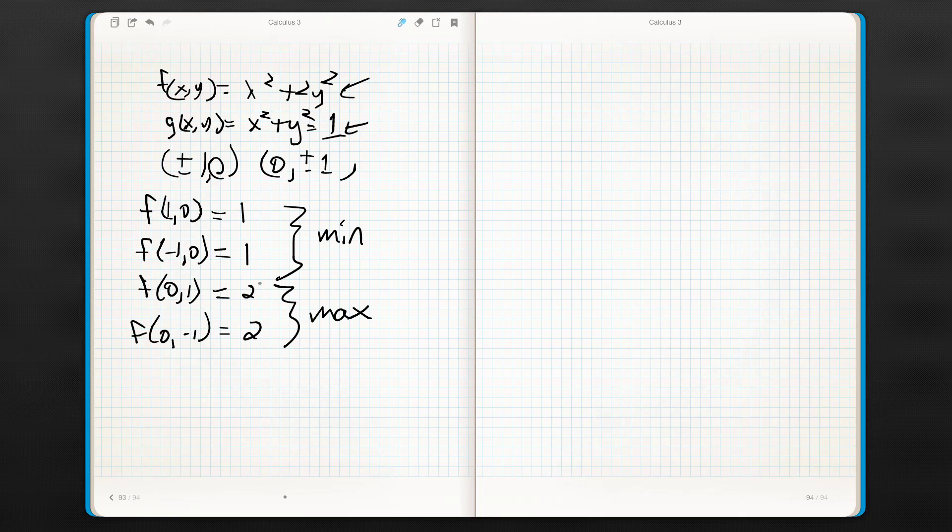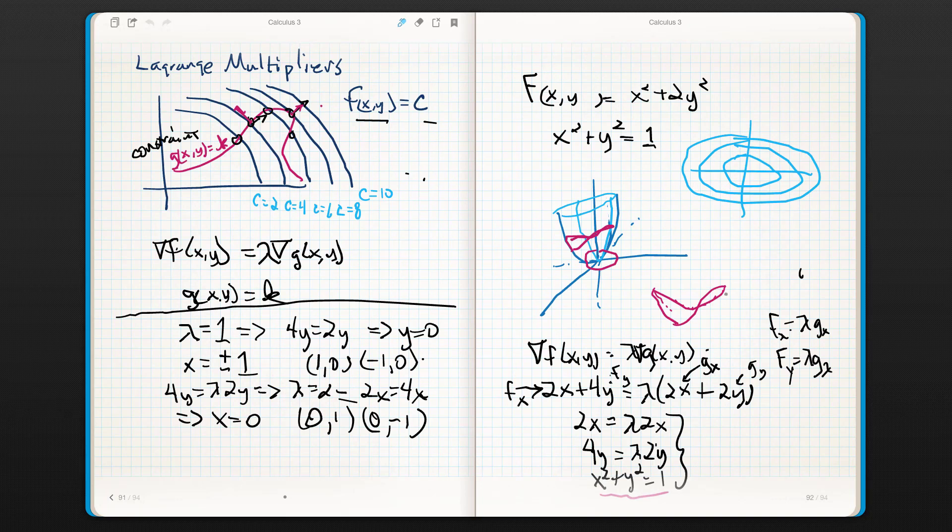Now, that's important, right? Lagrange only works if we have a constraint. Now, let me go back to my really crappy drawing and explain why this is true. Look, my maxs are going to occur here and here when I subject the paraboloid to this circular constraint. My minima are going to occur there and there, right?